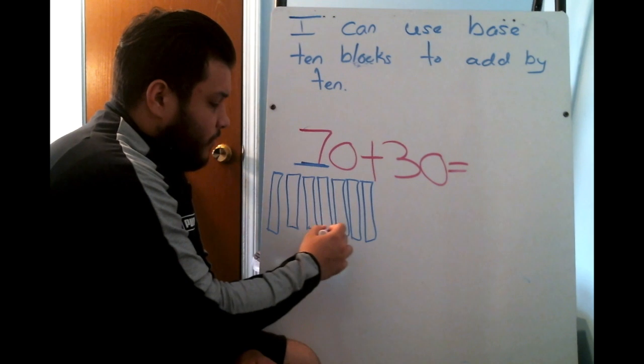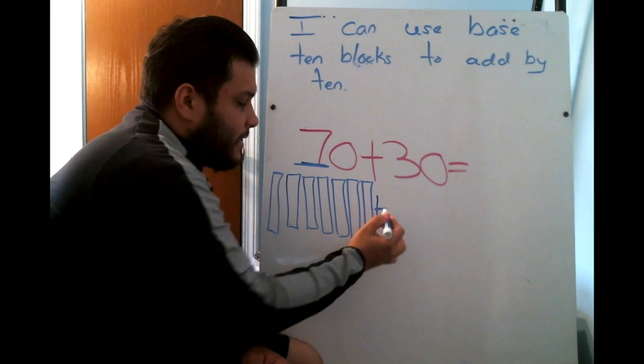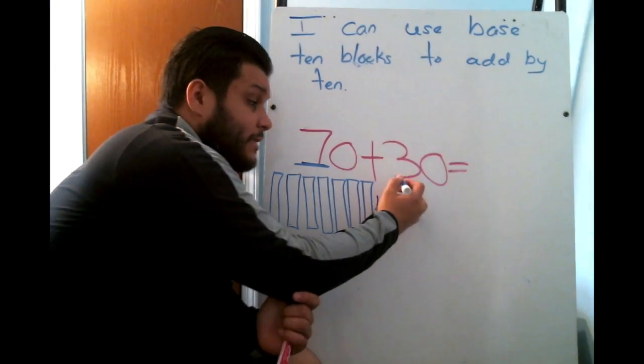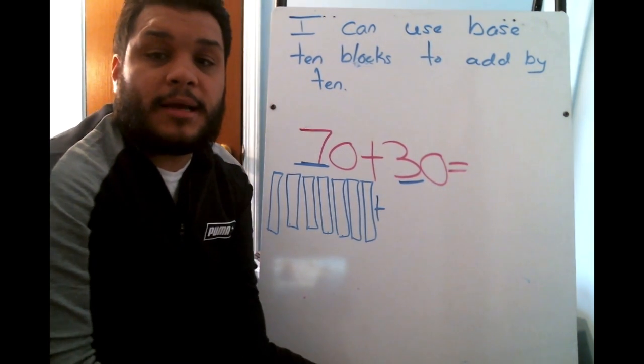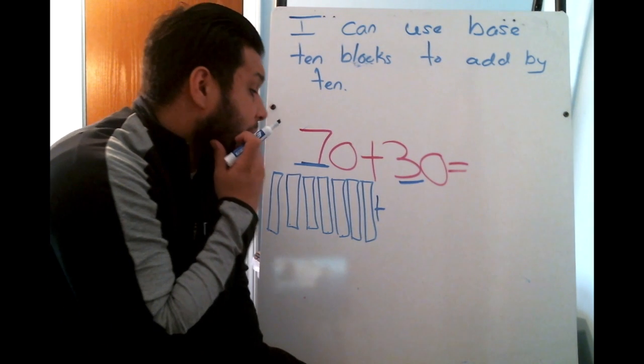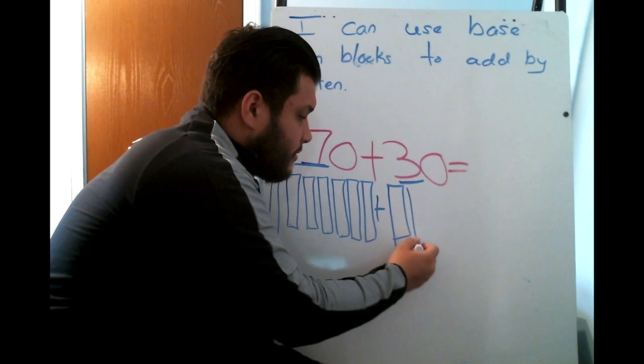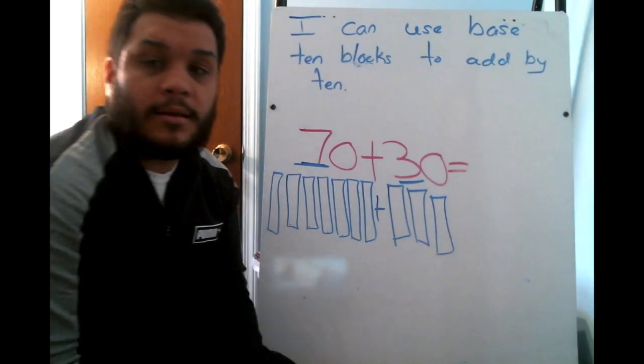1, 2, 3, 4, 5, 6, 7, 10, 20, 30, 40, 50, 60, 70. Bring my plus sign down. And how many am I going to draw here? Well, I will go to my 10s place. Underline the number 3. And because I see the number 3, I'm going to draw how many base 10s? Yes, 3.